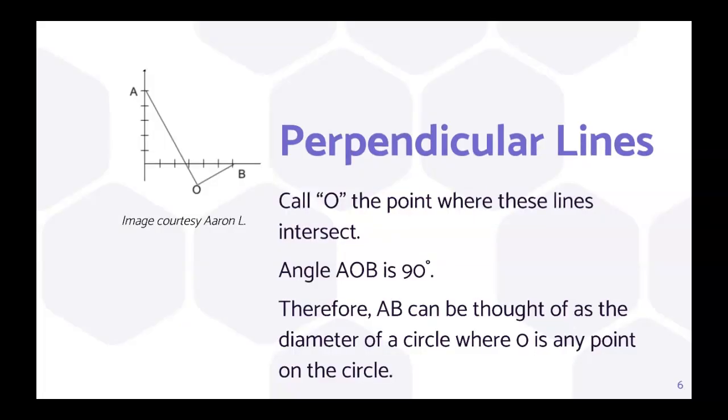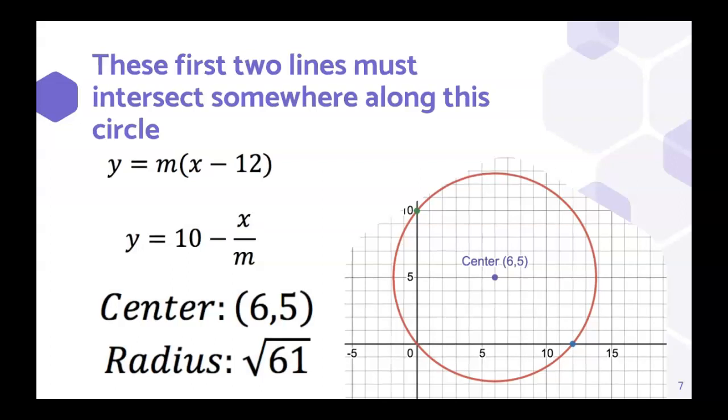This image, and most of the solution strategy, is courtesy of Aaron. We are going to call O the point where these lines intersect. And notice that because they're perpendicular, angle AOB will be 90 degrees. Therefore, we can view this as AB is the diameter of a circle, and O is any point along that circle.